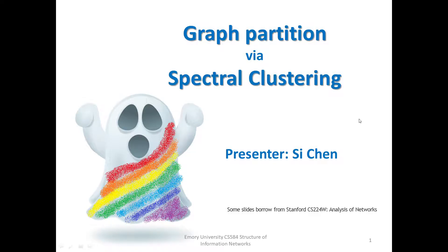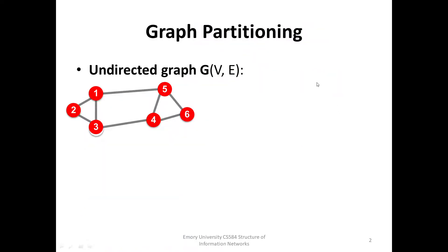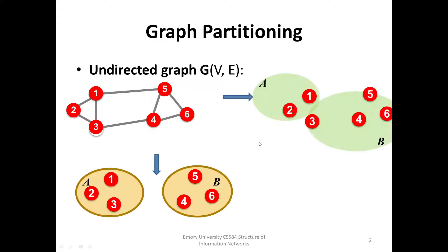Let's first review what graph partition is. Given an undirected graph G, our goal is to divide vertices into two disjoint groups A and B. In this example, intuitively, we can easily identify the best partition.